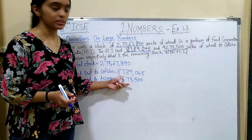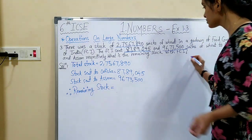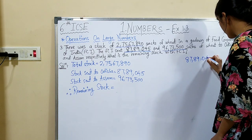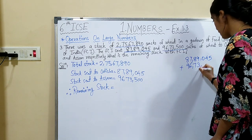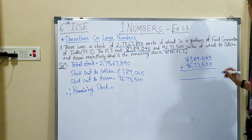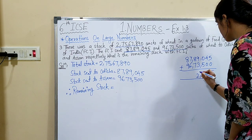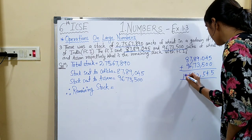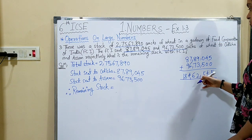We will first add the two numbers sent to Odisha and Assam, then subtract from the total. Adding 87,89,045 plus 96,73,500 gives us 1,84,62,545.